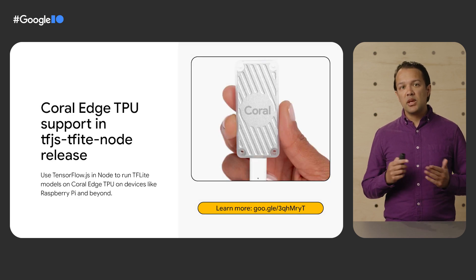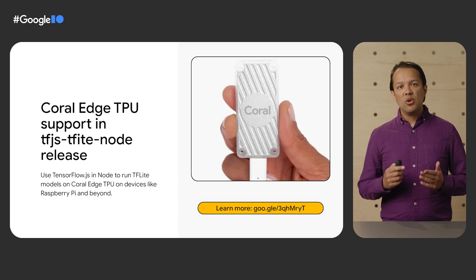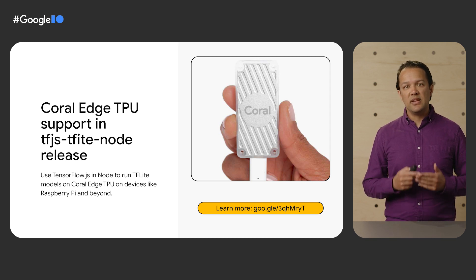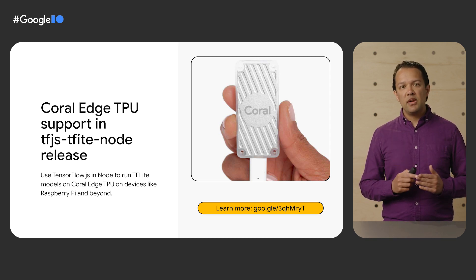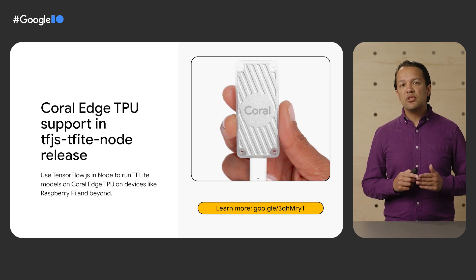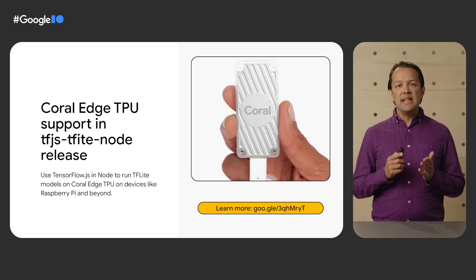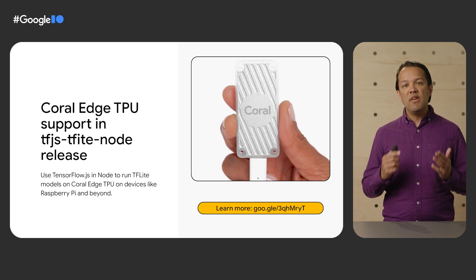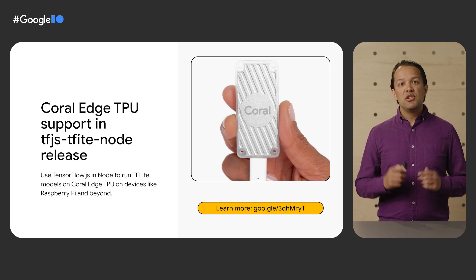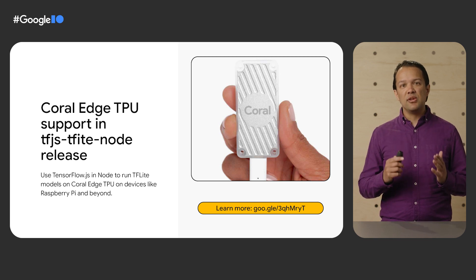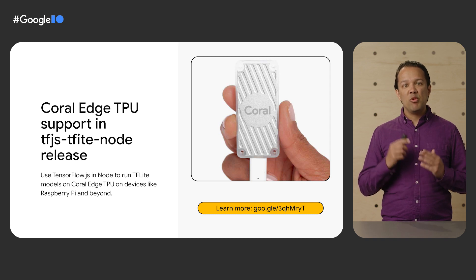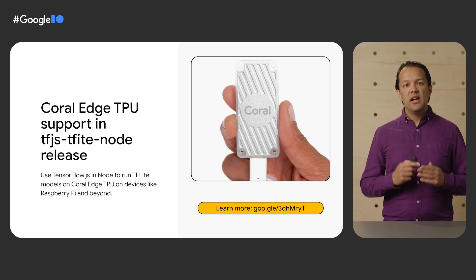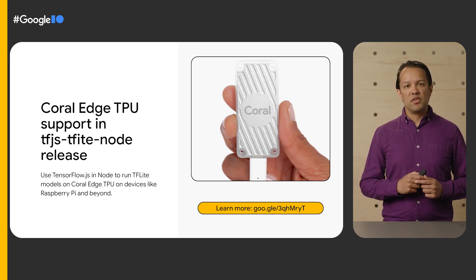Furthermore, following many requests from the community, we're pleased to announce the launch of the Coral Edge TPU support in Node.js via a special build of a library called tfjs-tflite-node. This will allow JavaScript developers to load and use any TFLite model, and execute it on a connected TPU Edge device within the Node.js ecosystem. So if you own a Raspberry Pi and you're looking to do low-latency model inference on such a device, you now can, and keep all your code in JavaScript without needing to learn a new language. Check the Codelab linked to learn how to use this feature.